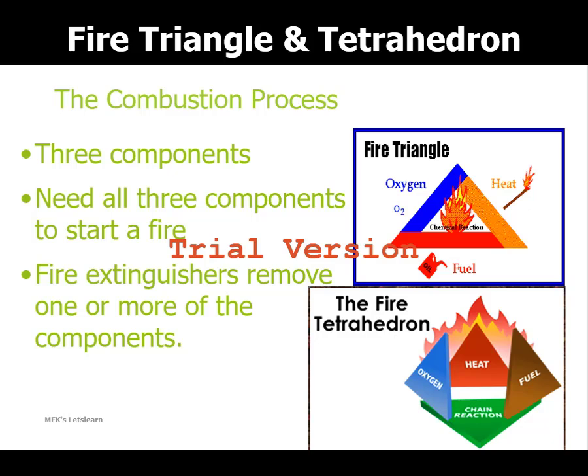In the fire tetrahedron, the chemical reaction between the fuel, heat, and oxygen represents the fourth component of the fire equation. If there is no healthy chain reaction, the fire cannot be continued — it will get suppressed.